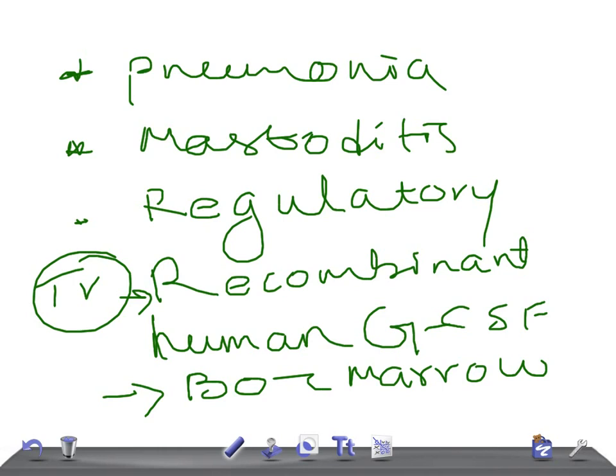If you check the WBC count during the interval phase, the neutrophils will be normal. But during the neutropenic phase, there will be neutropenia - that's why it's known as cyclic neutropenia.